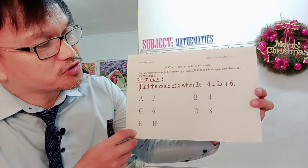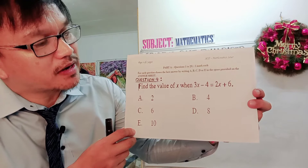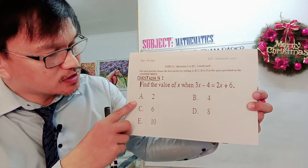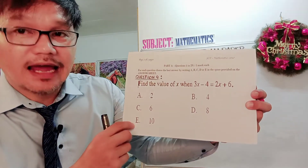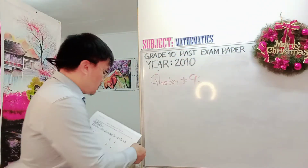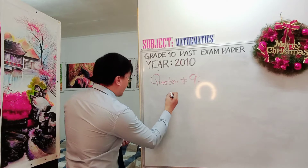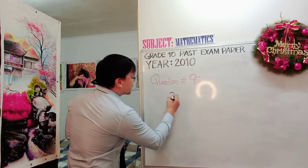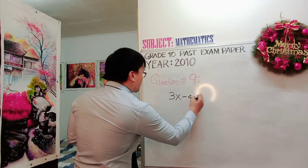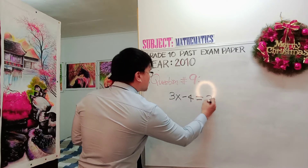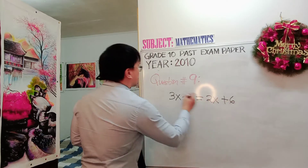Find the value of X when 3X minus 4 equals 2X plus 6. And these are the options A, B, C, D, and E. In your rough paper, you are going to rewrite: 3X minus 4 equals 2X plus 6.